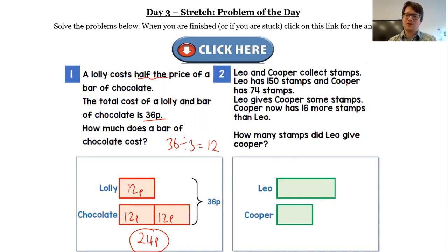Leo and Cooper, a slightly trickier one, collect stamps. Leo has 150 stamps and Cooper has 74 stamps. Leo gives Cooper some stamps, and Cooper now has 16 more stamps than Leo.